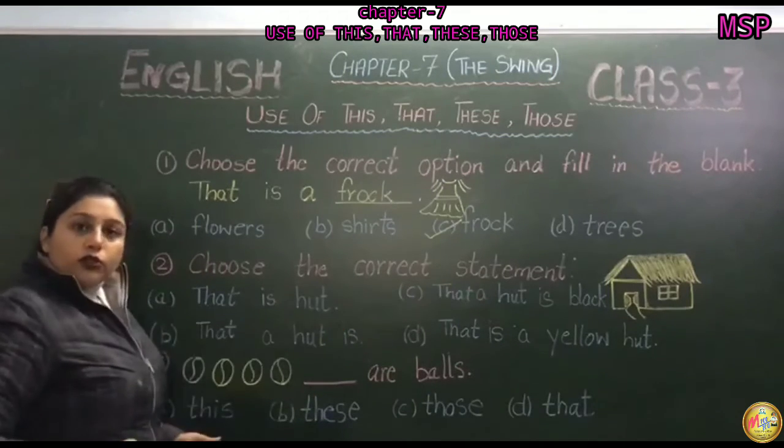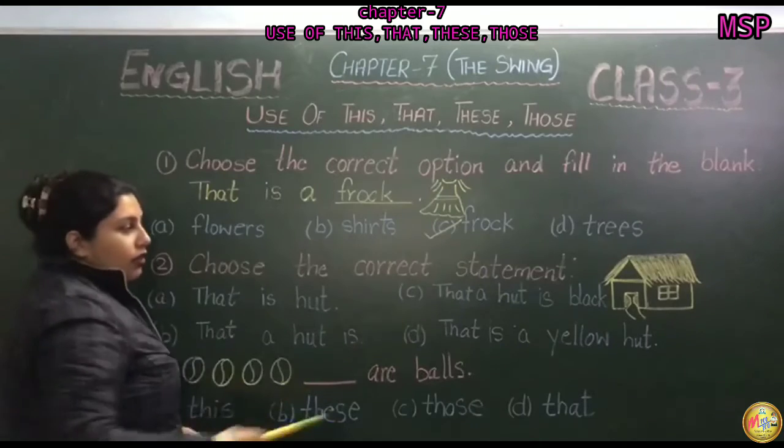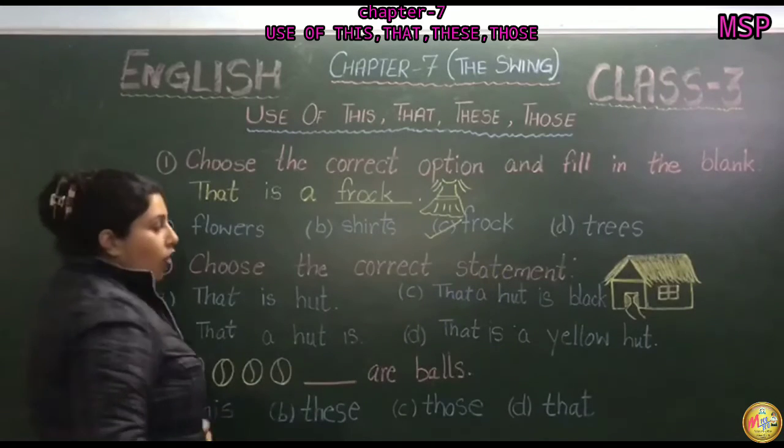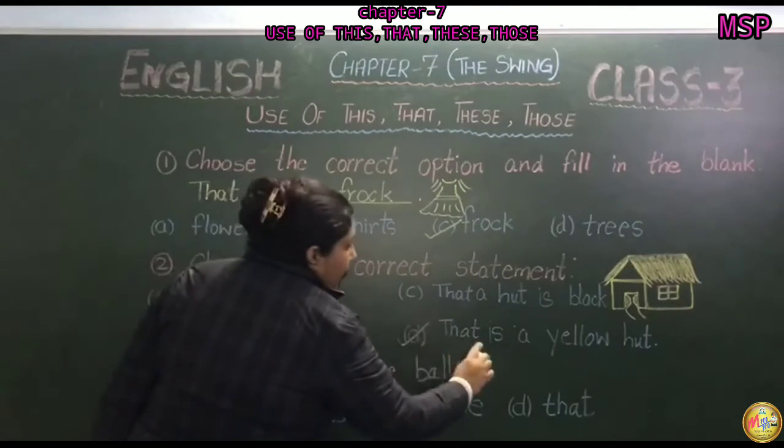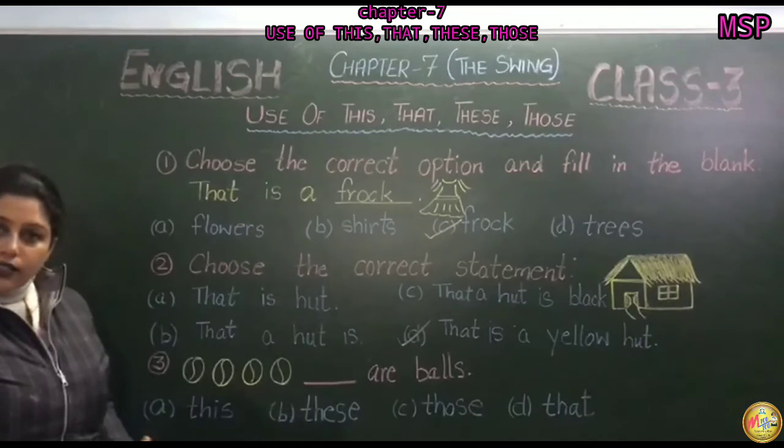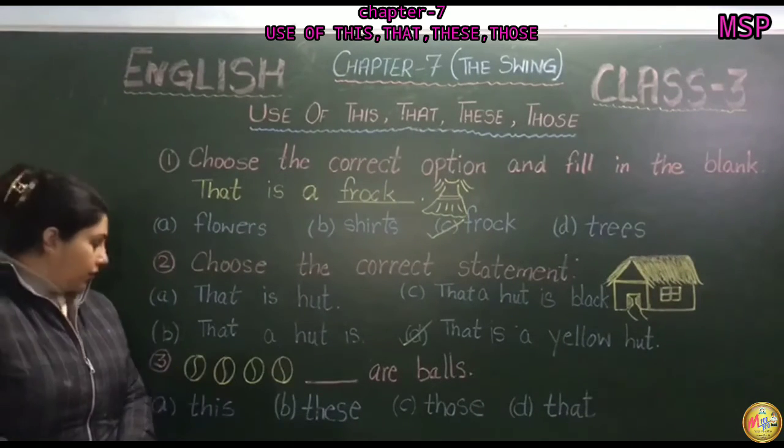O hut saadhe toh door hai, or ik hai naal, o yellow color di hai. So option D, that is a yellow hut, is correct statement.